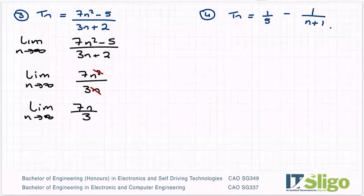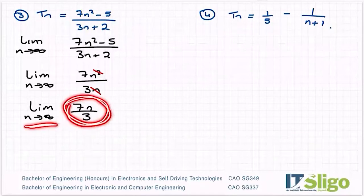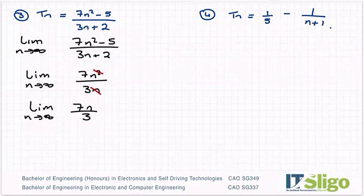n is on the top in this case. So again, imagine that a million. So now you've 7 million divided by 3. So once n is on the top, this number can get bigger and bigger and bigger. So as n gets bigger, as n approaches infinity, this number gets bigger. So it's divergent. So therefore, no limit exists.